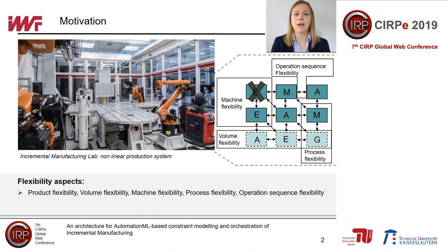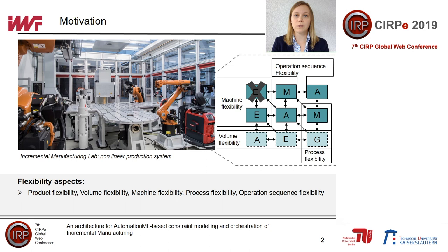The five most important flexibility aspects in the context of incremental manufacturing are the following. Product flexibility is characterized by fast and cost-efficient integration of new products, guaranteed by the use of robots with a scalable workspace. Volume flexibility from small to medium batch sizes can be achieved through the extendability of the production concept. Further aspects are machine versus operation flexibility, which we will have a closer look at in a few minutes.